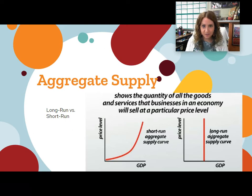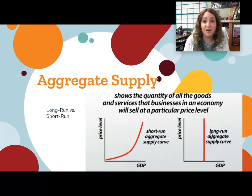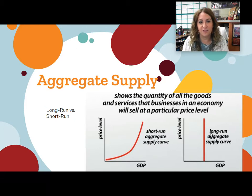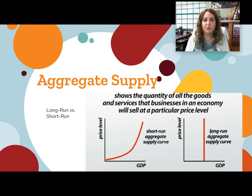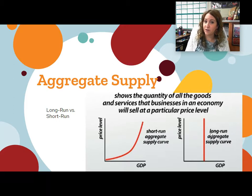Hey guys, now we're back talking about our graph. We put aggregate demand on pause for a little bit and now we're going back to the aggregate supply and demand graph where we need to talk about the other part of that graph: aggregate supply. If you remember what the graph looked like from the very beginning, it had aggregate demand, which was downward sloping, but then it had two other lines, both named aggregate supply — one of them being short run, the other one being long run.